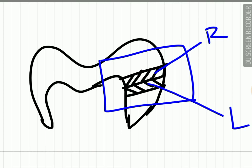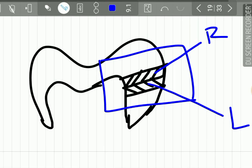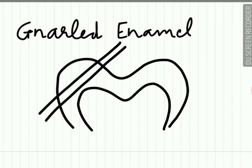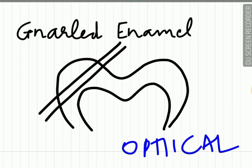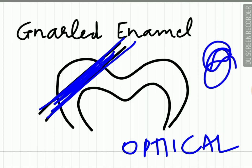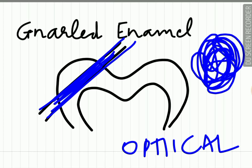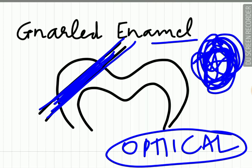Gnarled enamel is an optical appearance. If the enamel is cut in an oblique plane at the cuspal region near the dentine and this section is viewed, the rods in these sections seem to be more intertwined between each other, giving an irregular appearance. This irregularly looking enamel is called gnarled enamel, and it is an optical appearance.